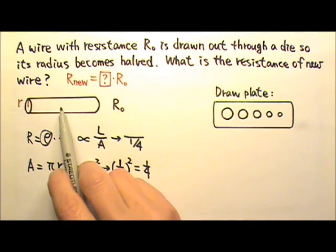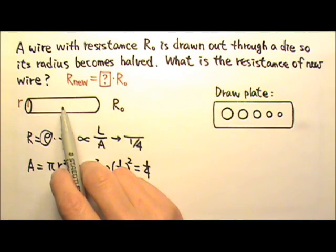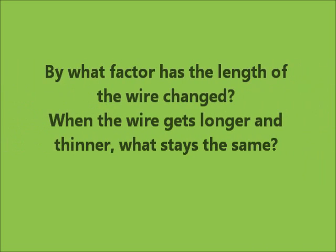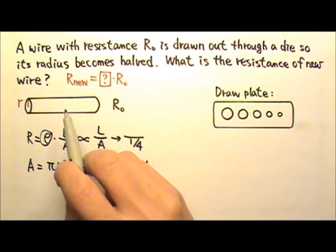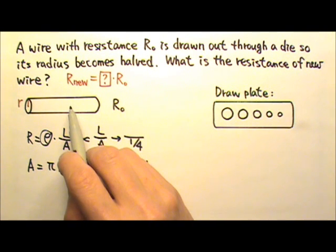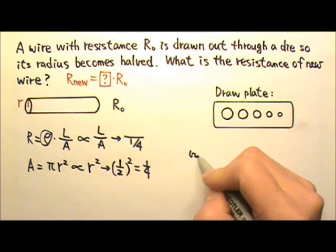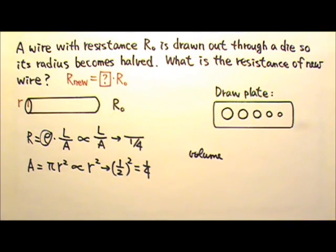When the wire gets longer and thinner, what stays the same? It's the amount of material that stays the same, so the volume stays the same.